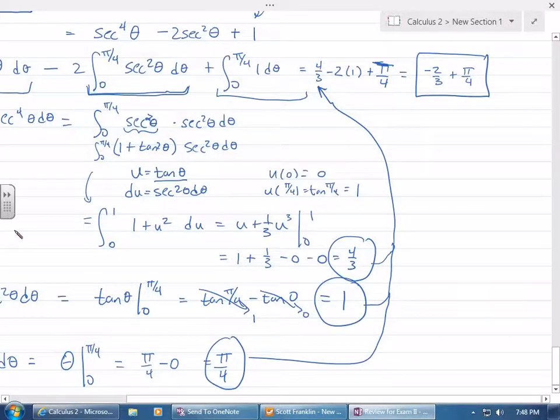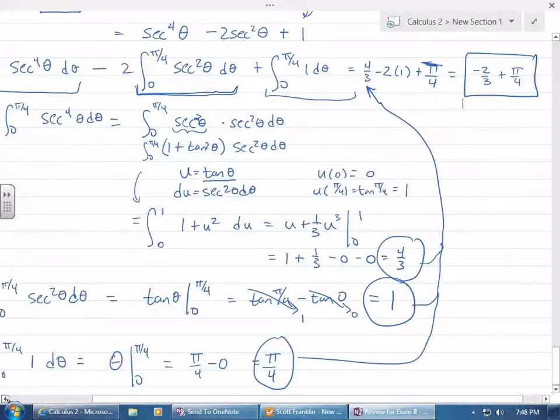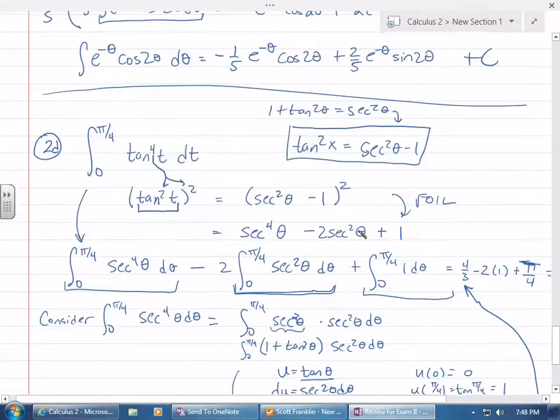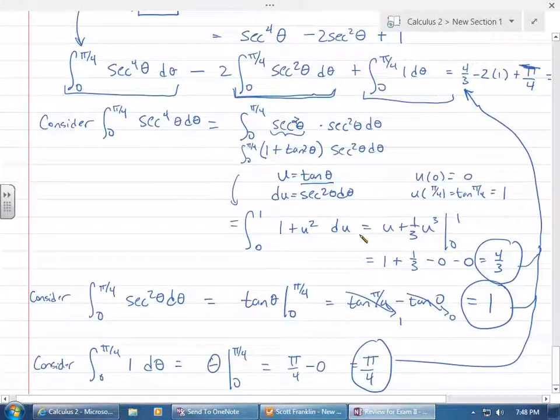That may not be the only way to do it, but that was the way that you guys suggested to try it, to do the tangent squared squared followed by Jeffrey's suggestion on using this identity. It worked. If it works, then it's right.